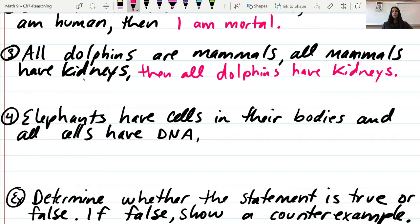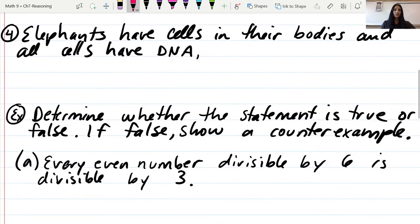It may appear we're stating the obvious, but this is a strategy we can use to make arguments or back up what we're saying. Number four: Elephants have cells in their bodies, and all cells have DNA, so elephants have DNA. You're starting to pick up on what we're doing and how we use this to back up our statements.